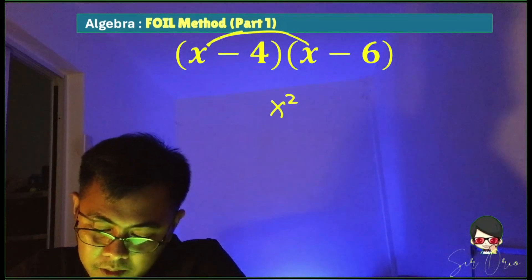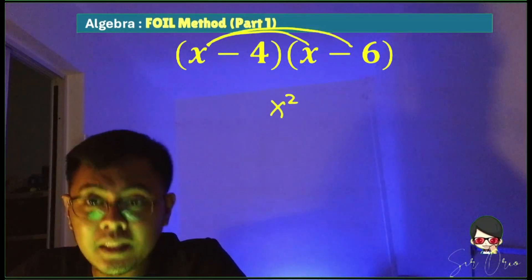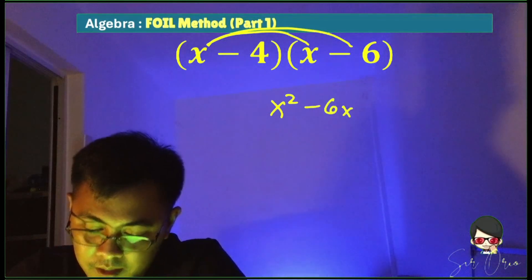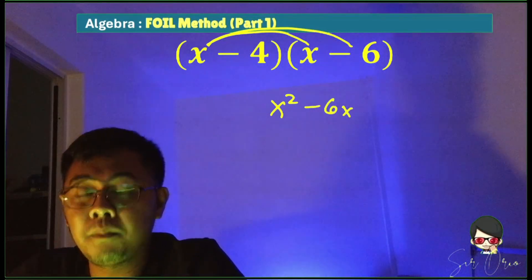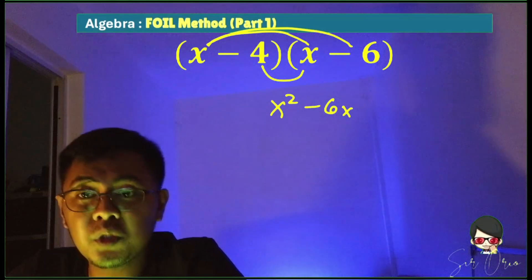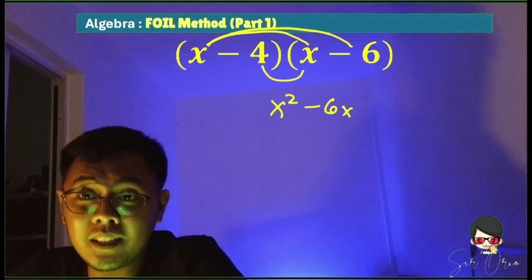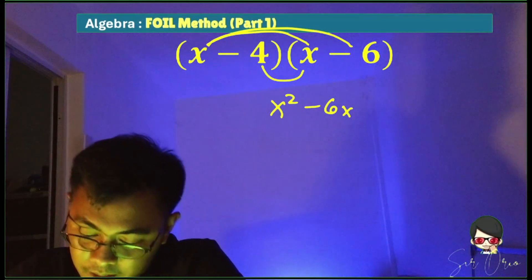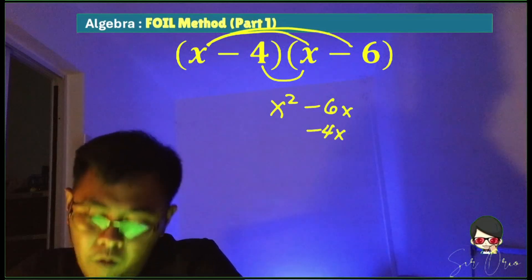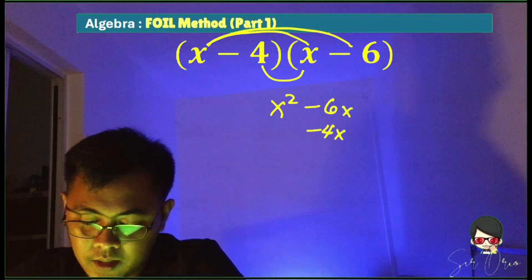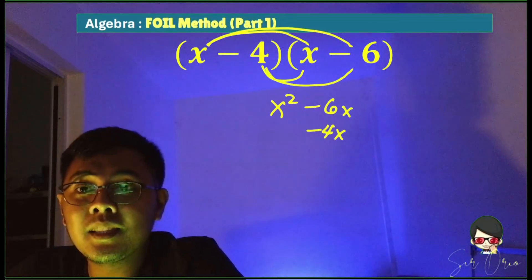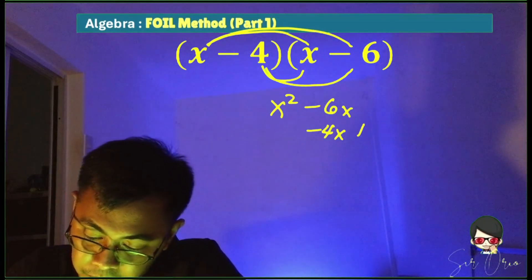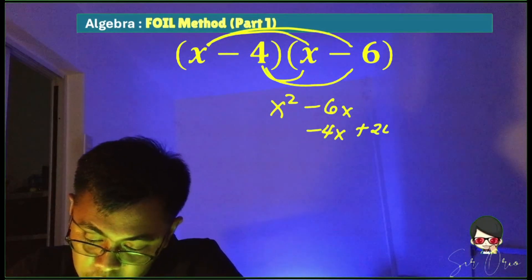Next, outer terms: x times negative 6, that is negative 6x. Product of the inner terms: negative 4 times x, that is negative 4x. Then negative 4 times negative 6, that is positive 24.